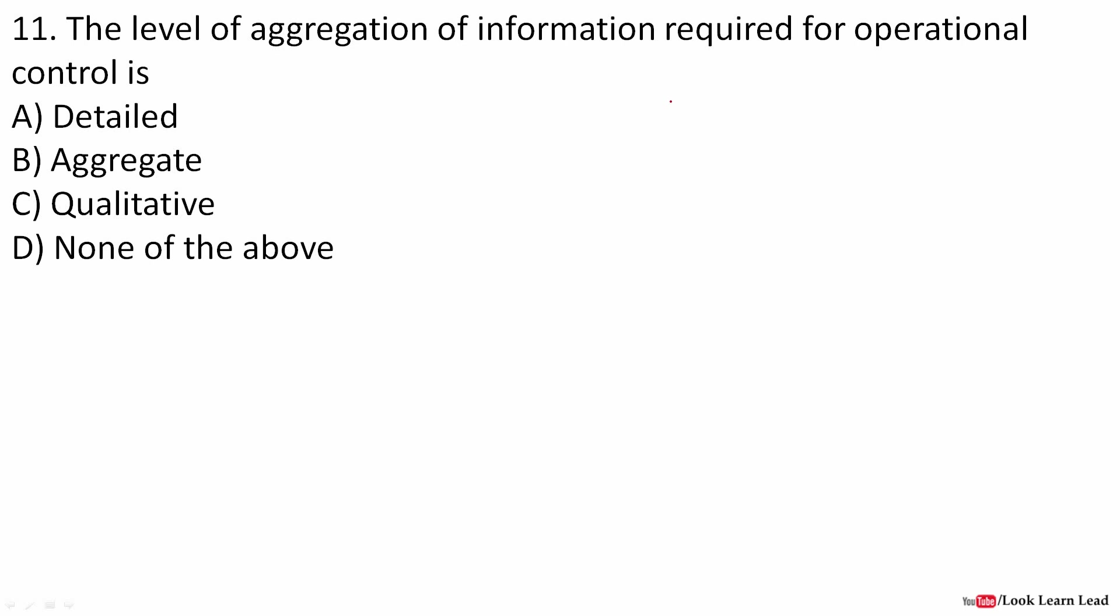The level of aggregation of information required for operational control is detailed, because you have to operate a system, so detailed information is required. But for strategic planning, only aggregate is enough. So the answer here is operational, so detailed would be your answer.